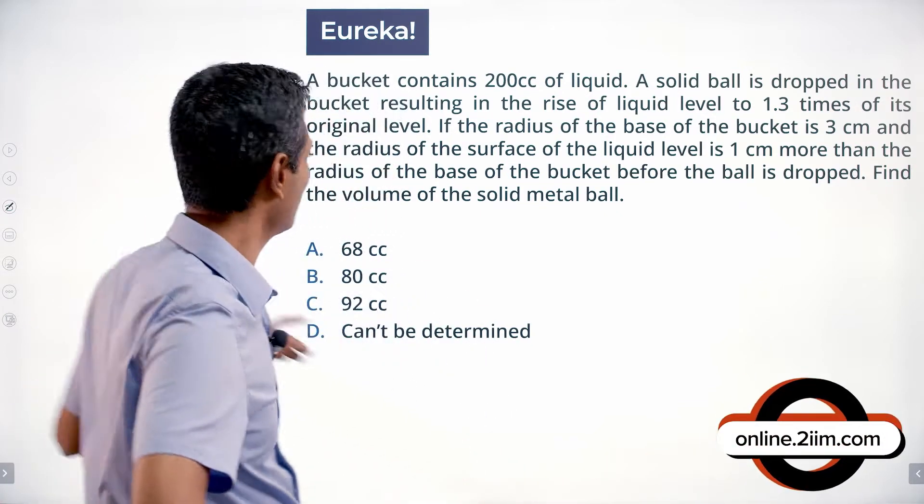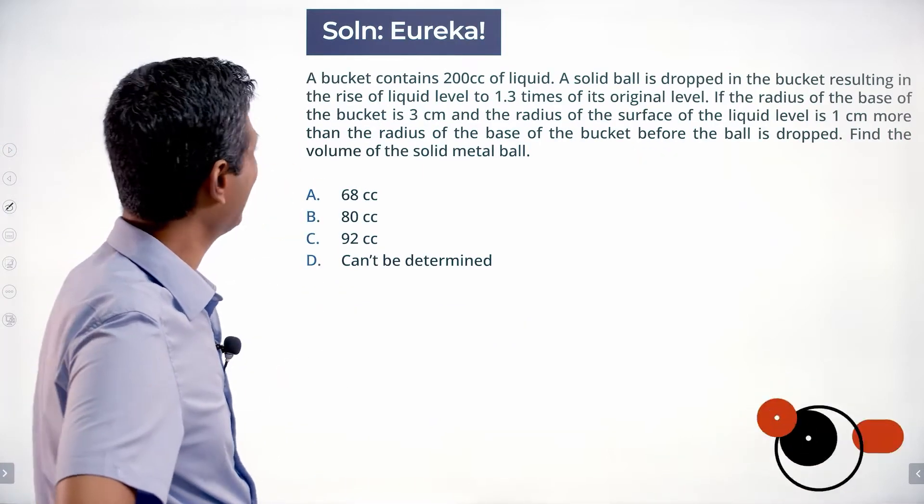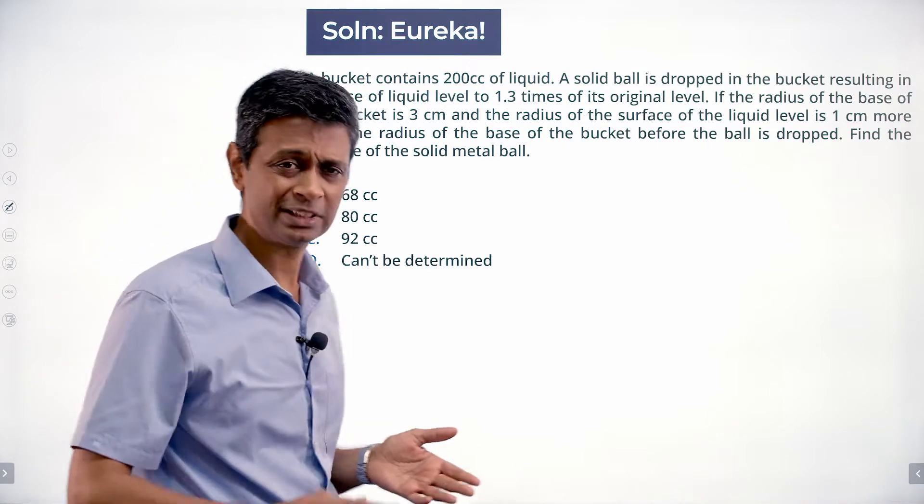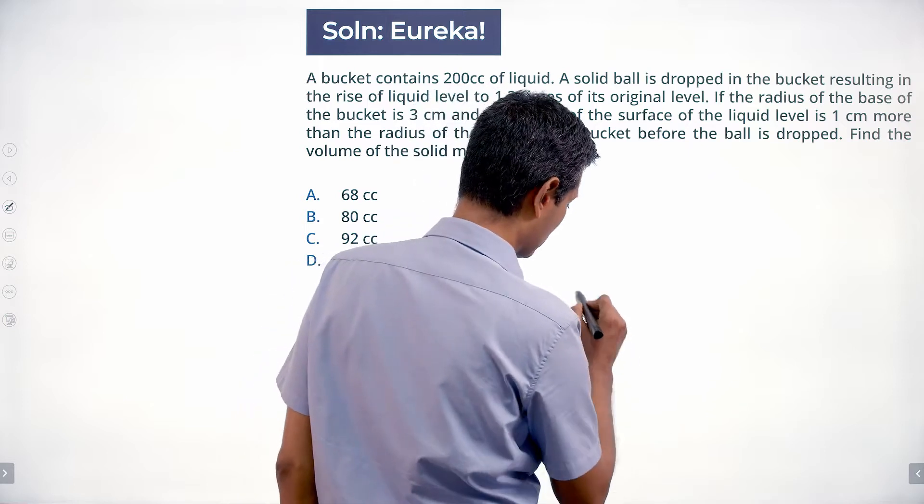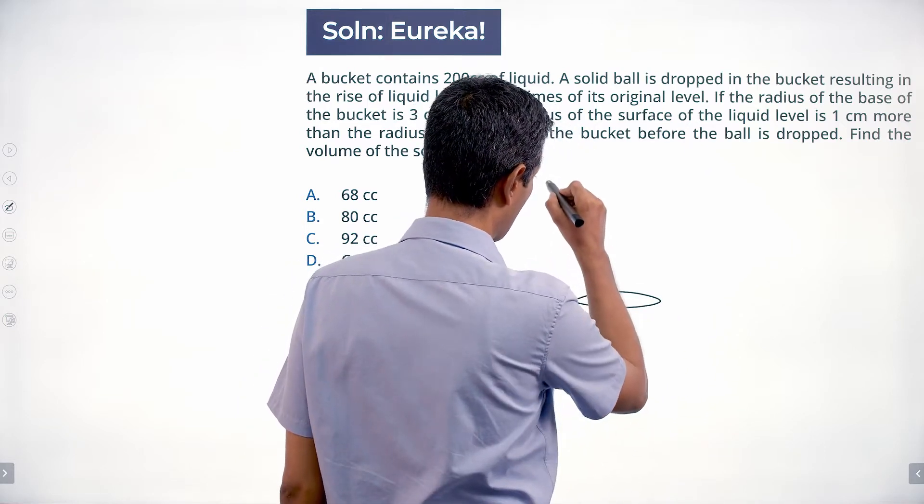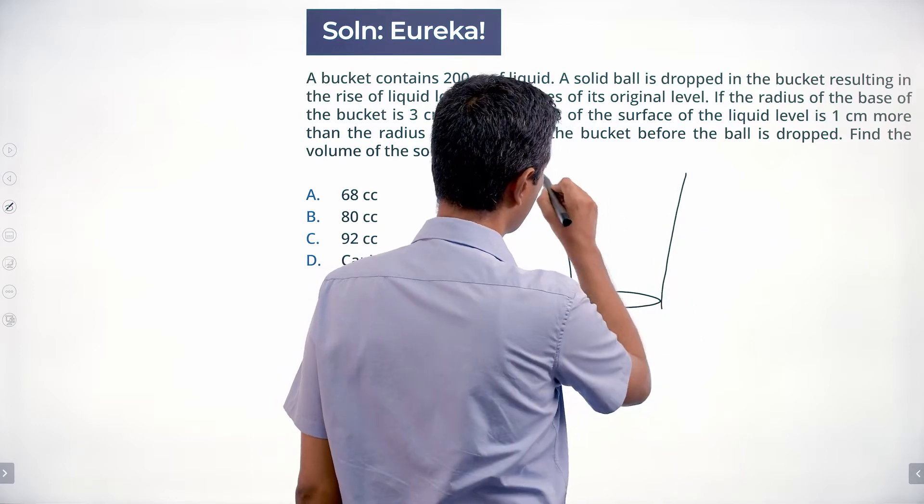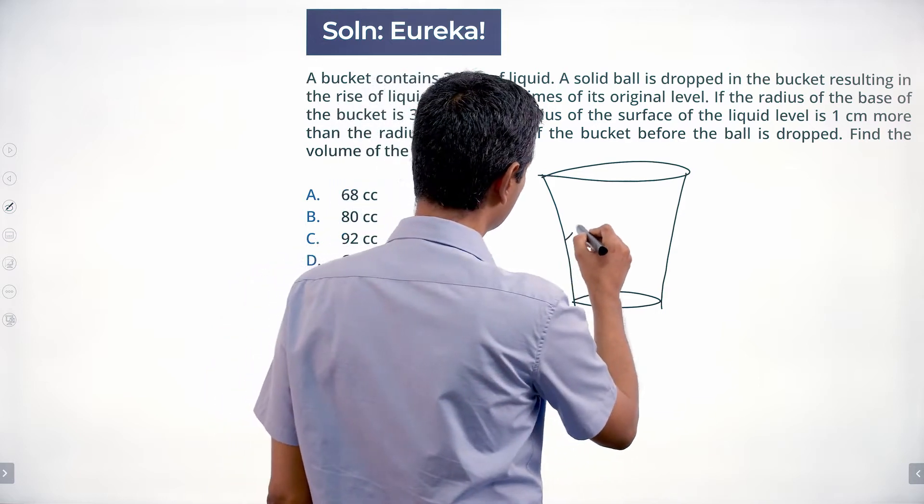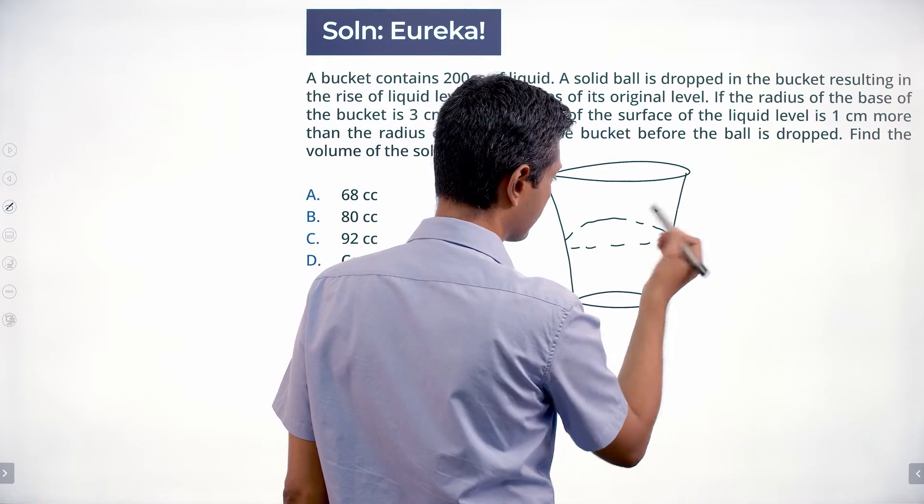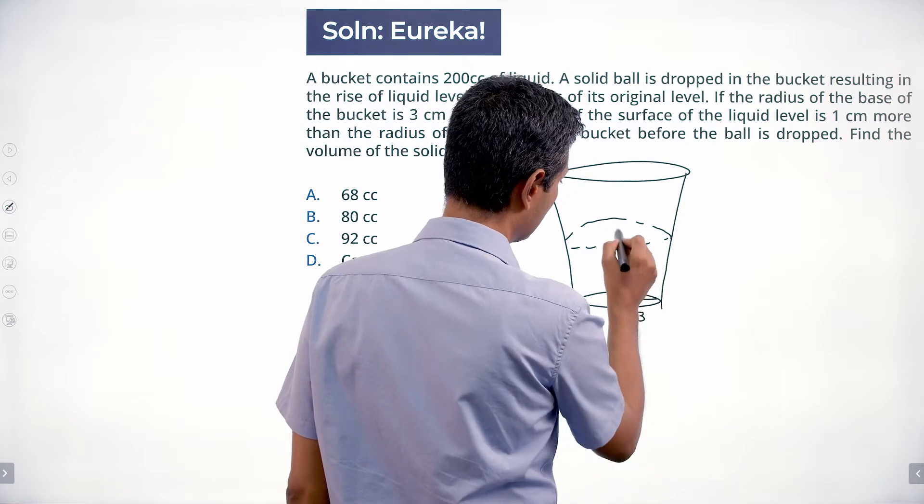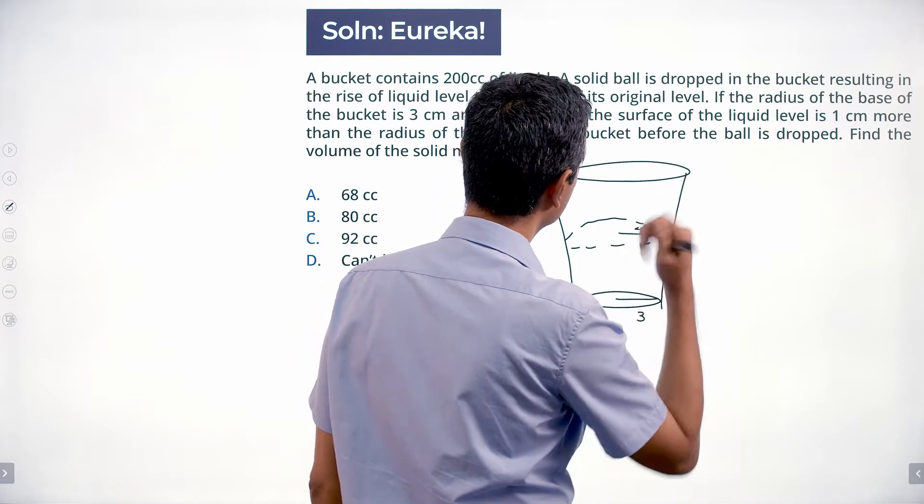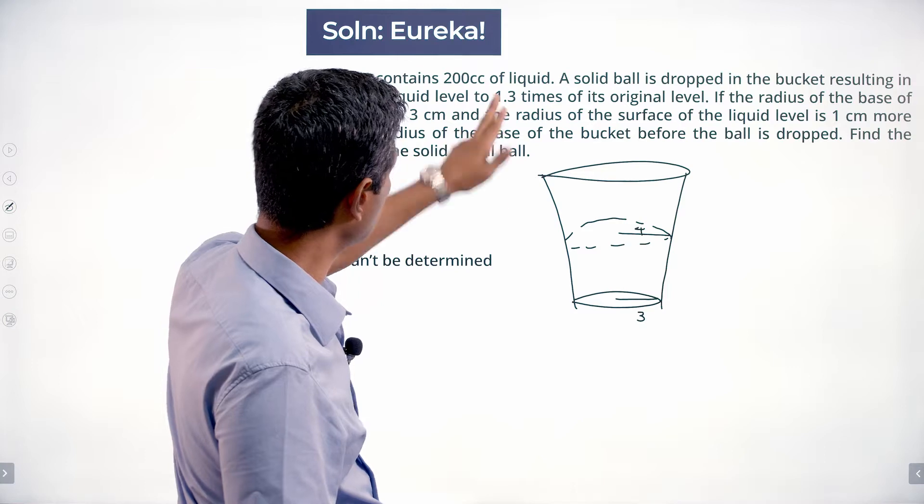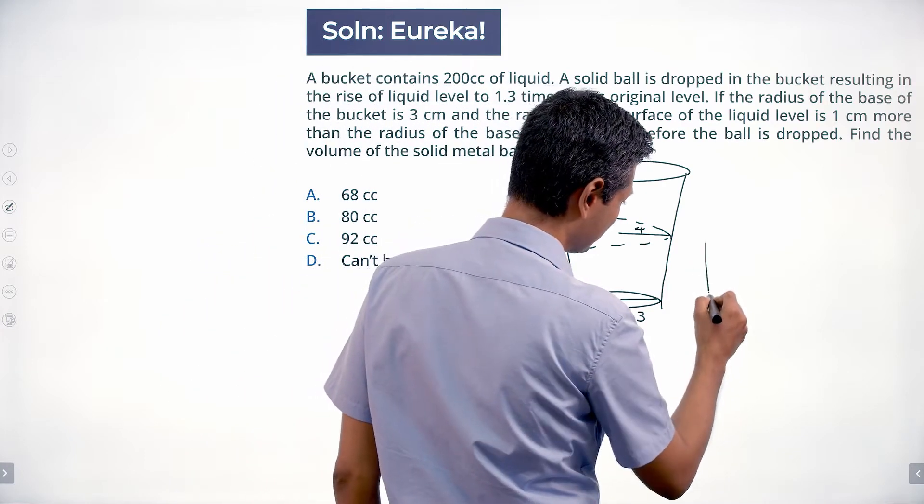All kinds of confusing data. First of all, I'm going to draw the bucket. The radius of the base of the bucket is 3 centimeters, radius of the surface is 1 centimeter more than the radius, so this bucket like a typical bucket would be like this. It's called a frustum, and so somewhere the water level is at this point. This radius is 3, this radius is 4, that much we know. And then after the ball is dropped, the height increases to 1.3 times of its original level.